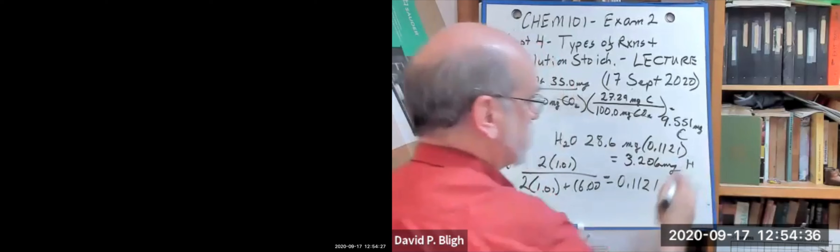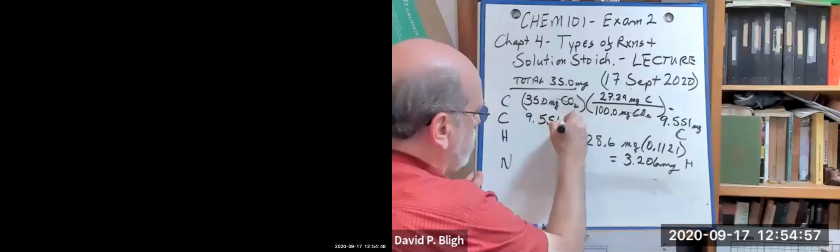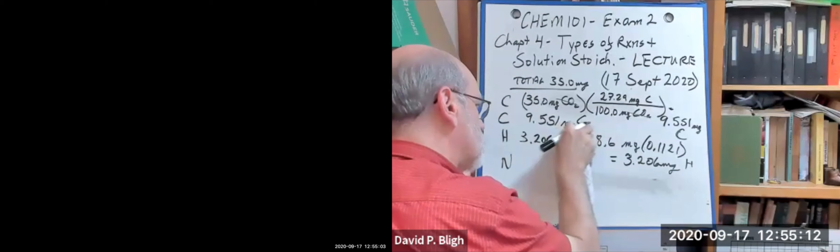That's the fractional equivalent of hydrogen in water. So if we multiply that times 28.6 milligrams of water, we get 3.206 milligrams. That's how much hydrogen is in that sample.